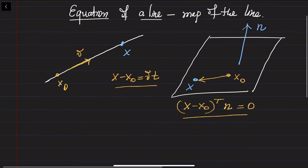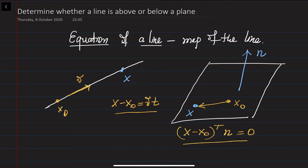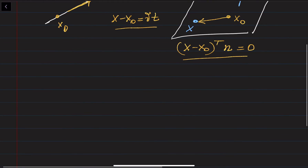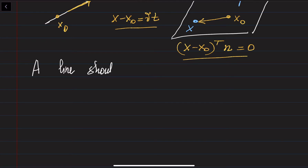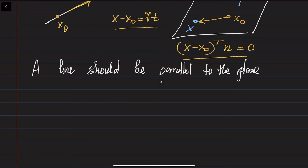Now we will talk about lines and planes and their connections. Whenever we discuss whether a line is above or below a plane, this only makes sense if the line and the plane are parallel. If the plane is not parallel to the line, they will intersect at some point in 3D, so we cannot meaningfully say whether the line is above or below.